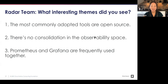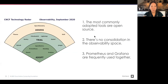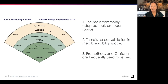Putting it all together, this is the final radar. In adopt: Prometheus, Grafana, Elastic, Datadog, and OpenMetrics. In trial: six tools. In assess: three tools. Cheryl asks each panelist for one thought or takeaway from going through this exercise.